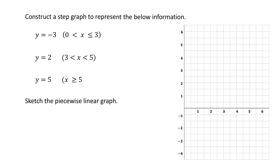Now let's look at an example of how to construct a step graph. We want to construct a step graph representing the given information. We have three equations, all with a zero gradient: y equals negative three, y equals two, and y equals five. Our step graph will have three separate lines. Before graphing, we need to determine which endpoints will be hollow and which will be solid.